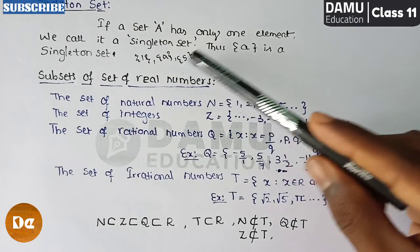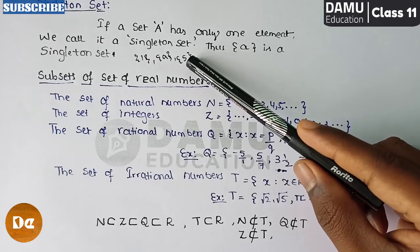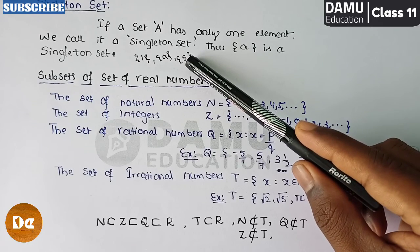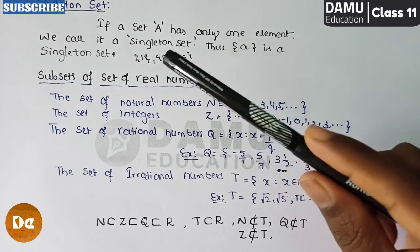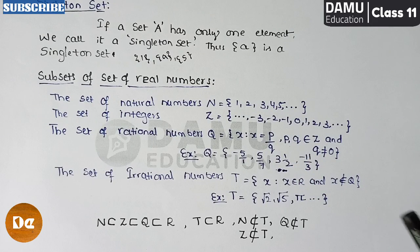So this is a brief introduction about subsets of the set of real numbers, and what is meant by a singleton set — a set which contains only one element, one object, or one member is called a singleton set. Thanks for watching. Please subscribe.